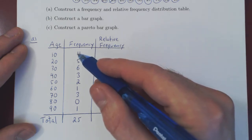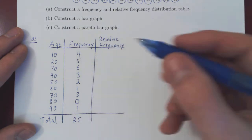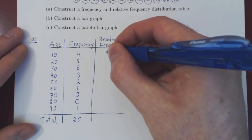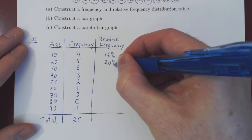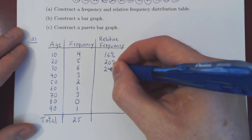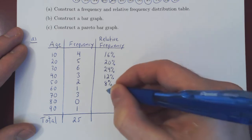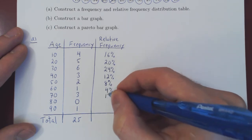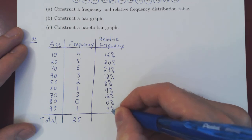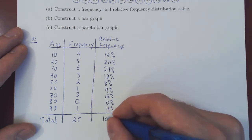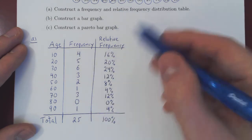So, you would simply do four, so every frequency over 25 times 100 to give you the percentages. So if you do so, this will give you 16%, 20%, 24%, 12%, 8%, 4%, 12% again, 0%, and 4%. If you add those up, of course, it should add up to 100%. And that's it. So now we have our frequency and relative frequency distribution table.